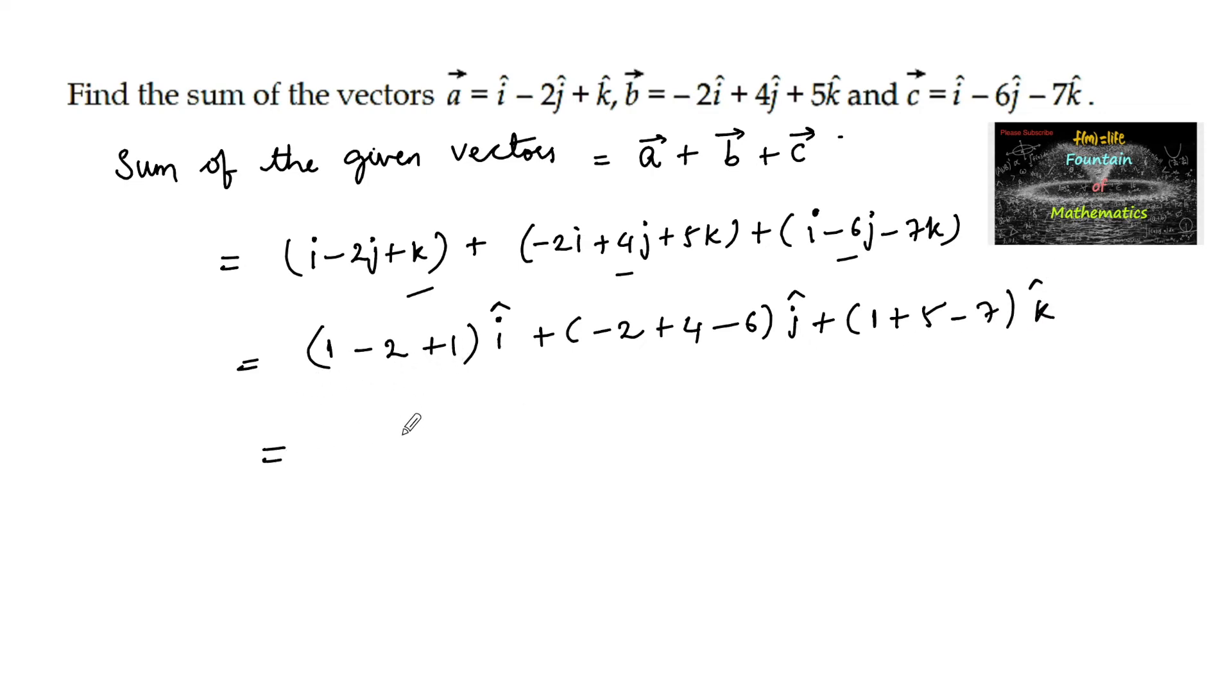1 plus 1 is 2 minus 2 is 0i, and here 4 minus 2 is 2 minus 6 is minus 4j, and here 6 minus 7 is minus 1k.